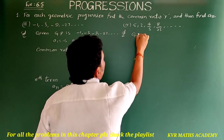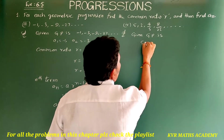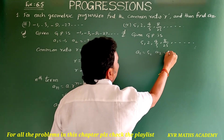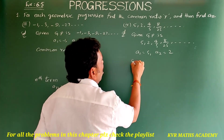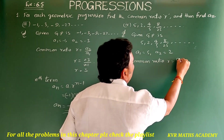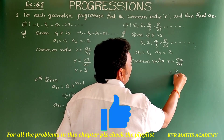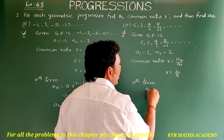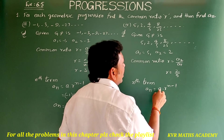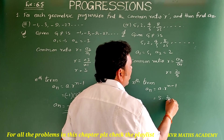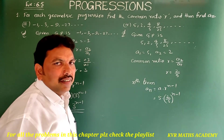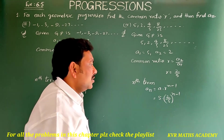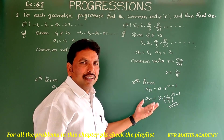Fourth question: the given GP is 5, 2, 4/5, 8/25, and so on. Here a1 = 5, a2 = 2. Common ratio r = a2/a1 = 2/5. So r = 2/5. Now the nth term: an = a × r^(n−1) = 5 × (2/5)^(n−1). This is an. Have you understood clearly? Note it down.